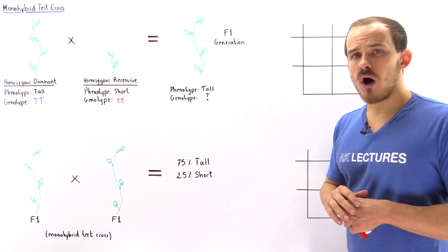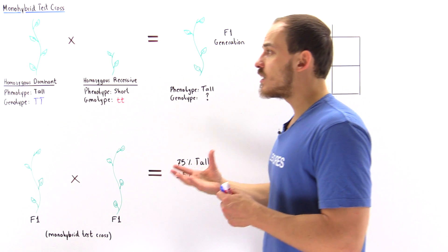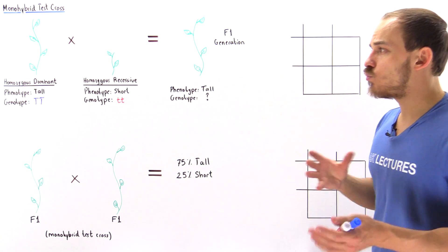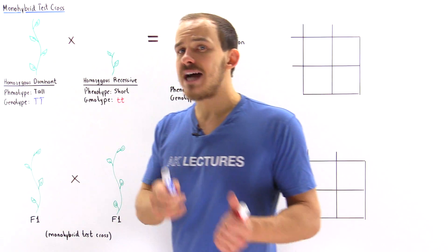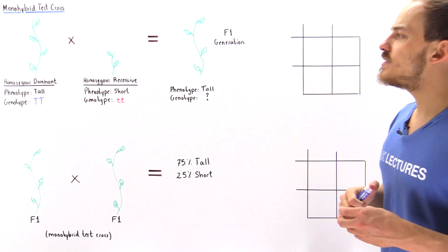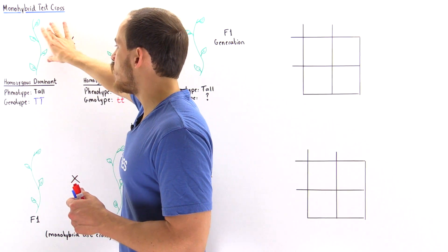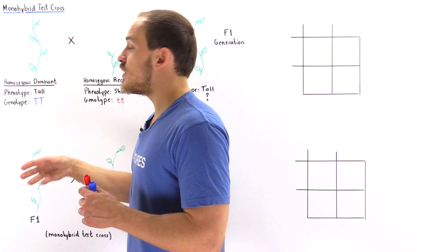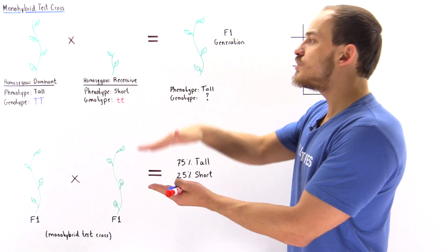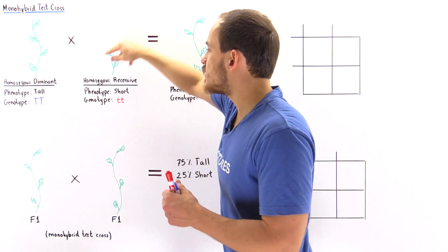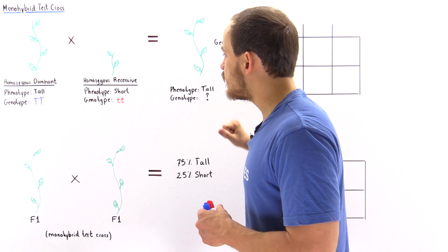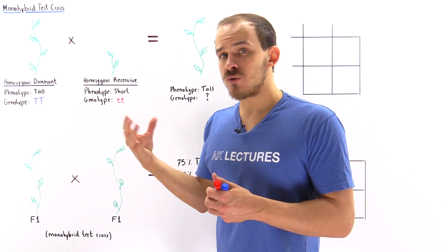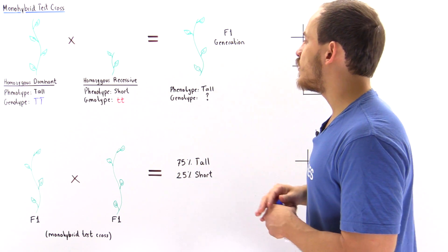Let's begin with experiment one. In experiment number one, he took a true breeding tall plant and crossed it with a true breeding short plant. That means he took a homozygous dominant plant and mixed it with a homozygous recessive plant. The phenotype for the tall plant is tall and the genotype is uppercase T, uppercase T, where uppercase T represents the gene that codes for proteins expressing the tall height. For the homozygous recessive plant, we have a short phenotype and a genotype of lowercase t, lowercase t, where lowercase t codes for proteins expressing the short trait.